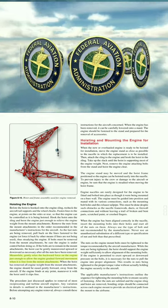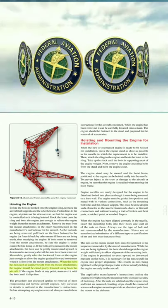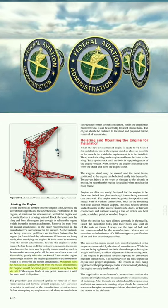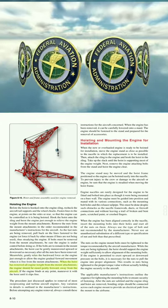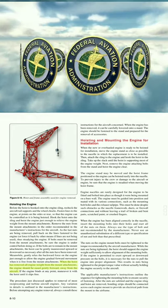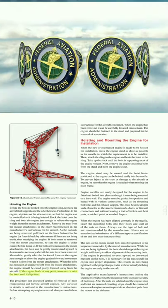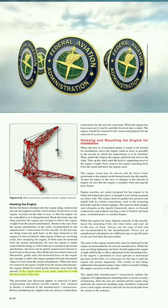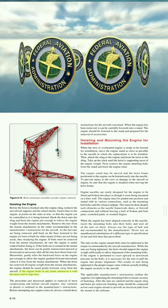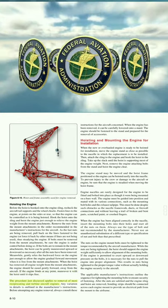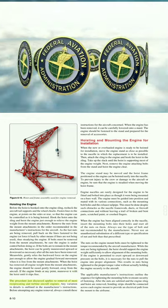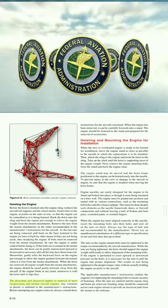Gently relax the backward force on the engine just enough to allow gradual forward movement. When the hoist has removed all engine weight from the mount attachments, ease the engine gently forward away from the aircraft. If the engine binds at any point, maneuver it with the hoist until it slips free. This procedure applies to removal of most reciprocating and turbine aircraft engines.